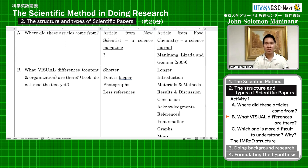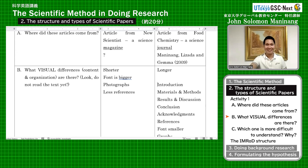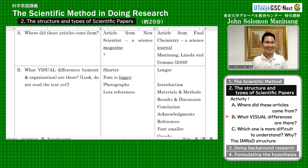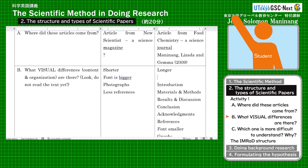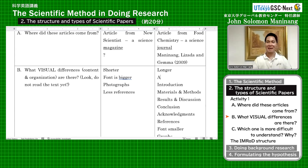So we have the introduction, we have the materials and methods section, results and discussion section, conclusion, acknowledgements. But before the introduction, there is another section — you missed it out. We have the abstract. So most scientific papers usually include this abstract section as well.